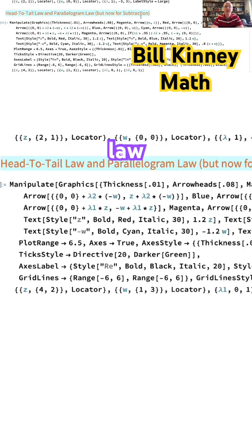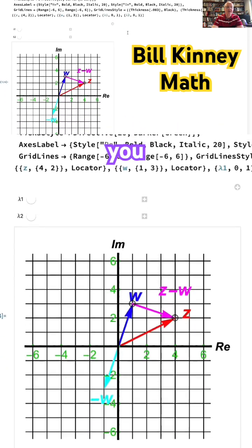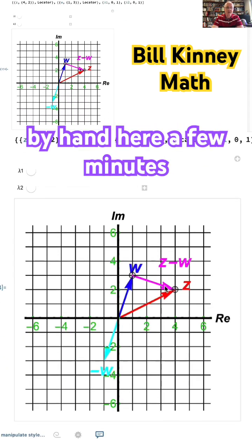Tail law and the parallelogram law, but now for subtraction in both ways like I just showed you. So what we've got here are two complex numbers z and w, the ones I plotted by hand here.